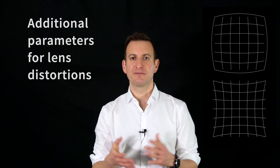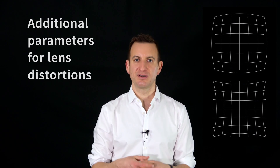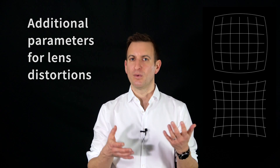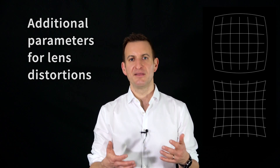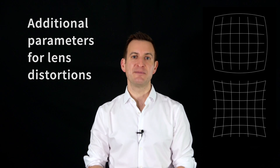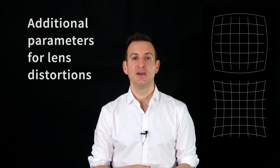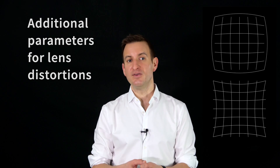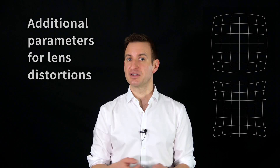In practice, a few more parameters are involved. For example, lens distortions such as barrel distortion or cushion distortion add additional so-called non-linear parameters to the model that need to be estimated separately.